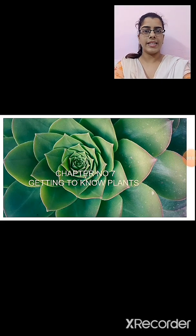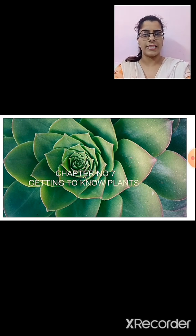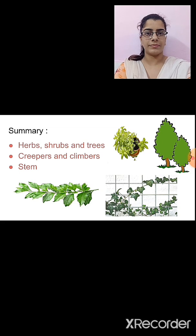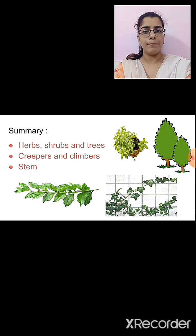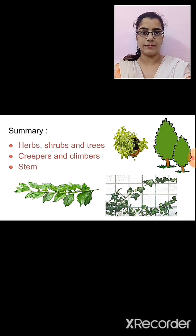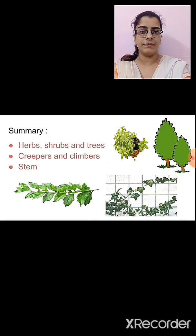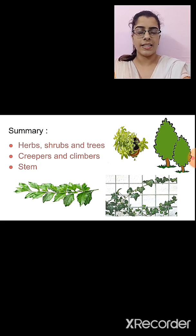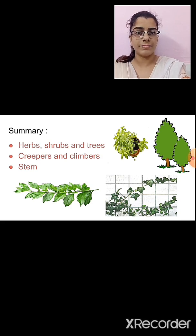Hello students. In the last session we started with chapter number 7, 'Getting to Know Plants.' We studied that we see many plants around us. Not all plants appear the same — some are smaller in size while some are taller. The leaves of different plants vary according to their shape, size and color. We can see differences in the flowers as well. Then we studied the difference between herbs, shrubs and trees.